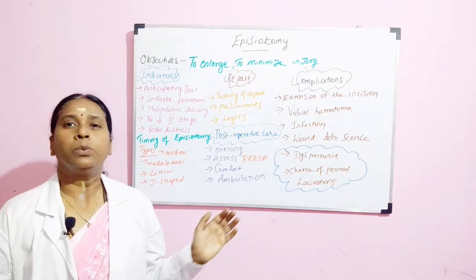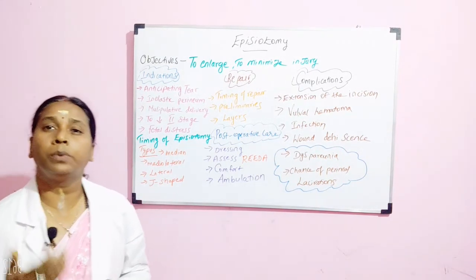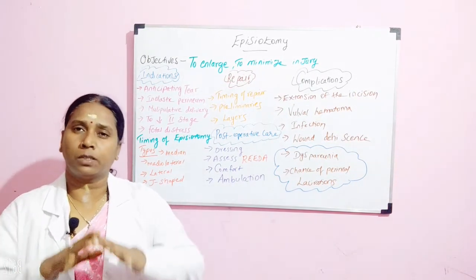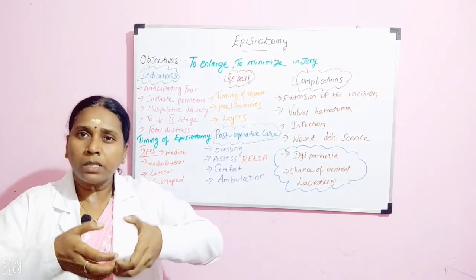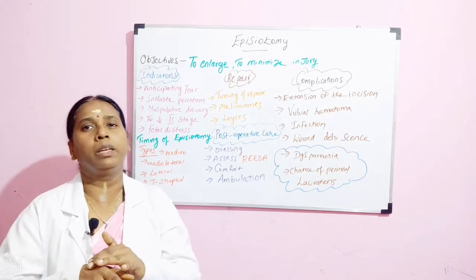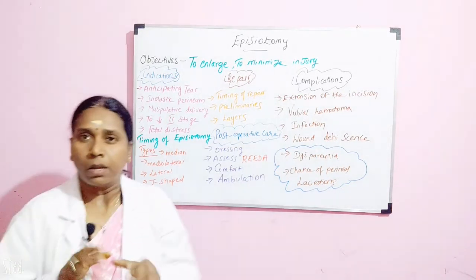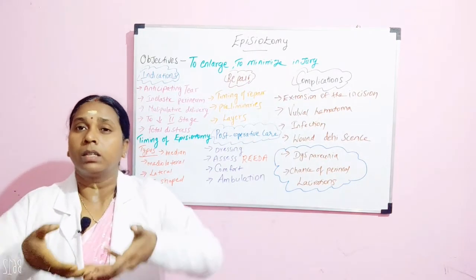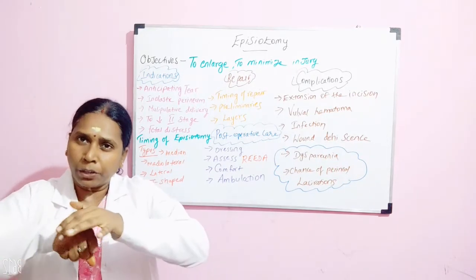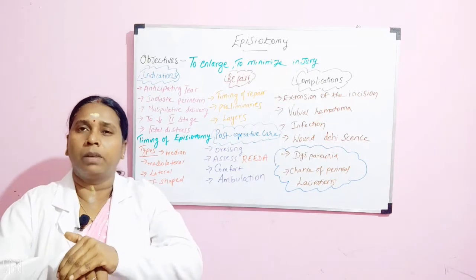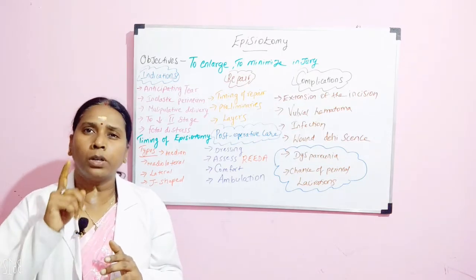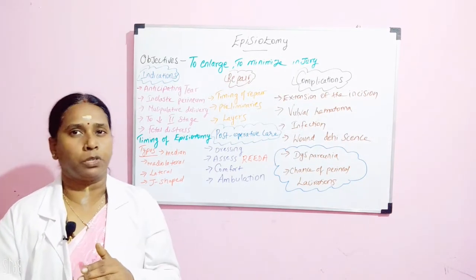Regarding the timing of episiotomy: it is given when there is a full contraction and bulging of the perineal region. Usually it is given just before the stage of crowning — when there is a perineal bulge, the perineum is becoming thin and stretching, and the head is visible near the perineum. At that point, during a full contraction, you give the episiotomy cut.